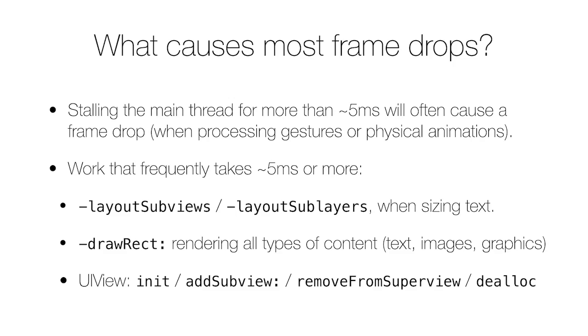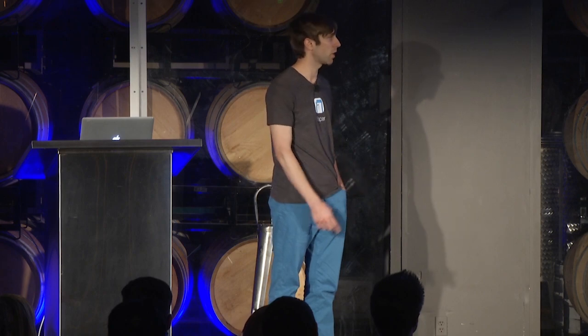Things that commonly take more than five milliseconds on the main thread are layout subviews — primarily sizing text — rendering just about anything including drawing glyphs of text, decoding images whether PNG assets or downloaded JPEGs, rendering arbitrary graphics or Core Graphics like creating a gradient instead of loading an image asset. But also UIView: simply initializing views is relatively expensive, you're often creating whole trees of them. Adding subviews, removing from superview — these things actually send notifications to other views that changes have occurred and walk the hierarchy to check if there should be a new first responder. Even deallocating views is expensive.